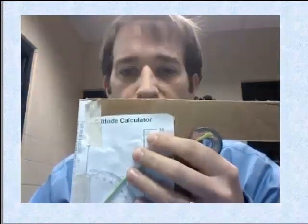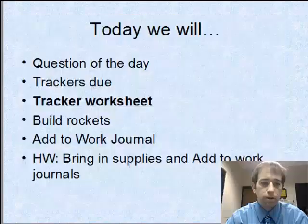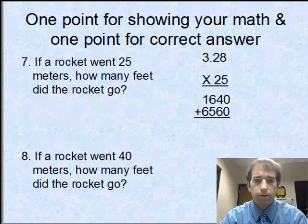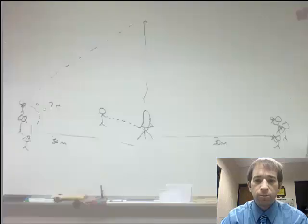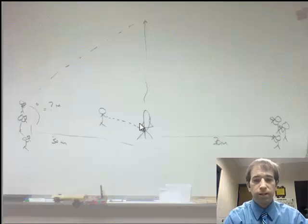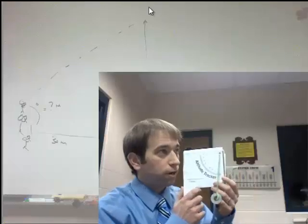When we shoot them off, we're going to be 30 meters away on either side with the rocket in the middle. One of you will be pulling the string and the rocket will fly straight up. The people on the outsides will be watching the rocket go up.